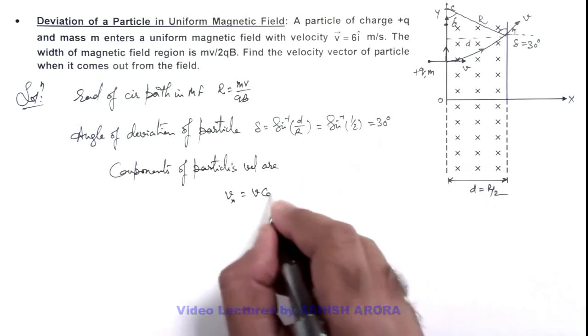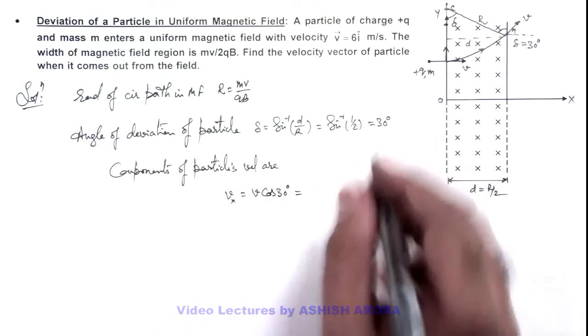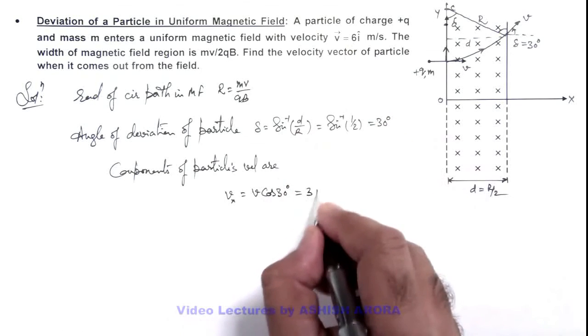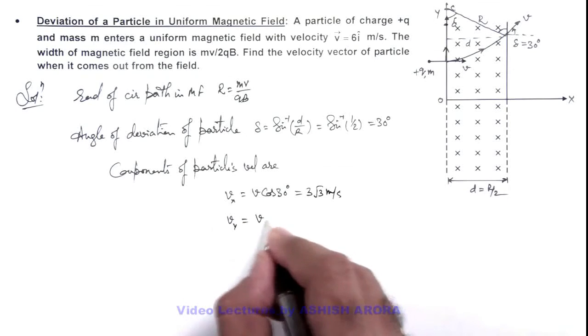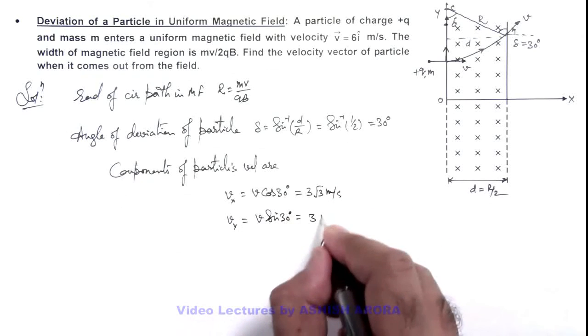That is, vₓ = 6 cos 30° = 6 × √3/2 = 3√3 meters per second. And velocity in y direction is v sin 30 degrees, that is 6/2, which is 3 meters per second.